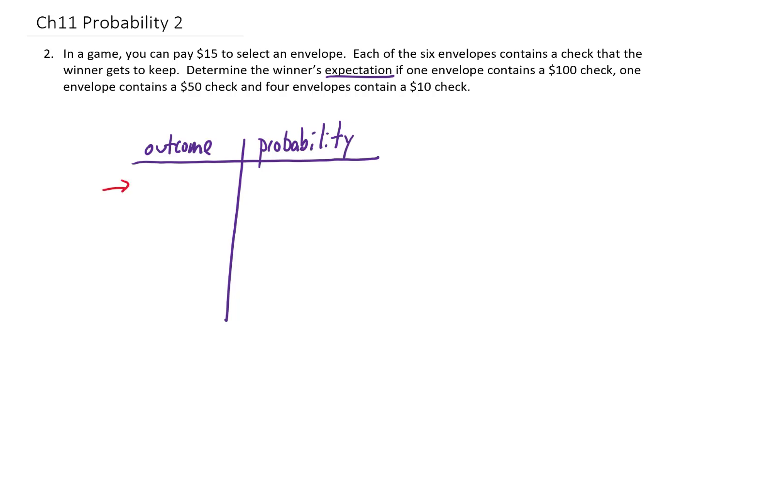The first possible thing that can happen is that we select the envelope that has the $100 check in it. That is great, we got a $100 check, but we paid $15 to get that $100 check. So ultimately, our outcome is that we made $85 on that deal. That's the $100 check that we got minus the $15 that we paid.